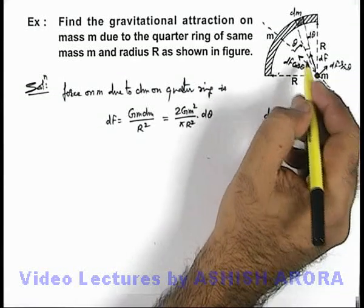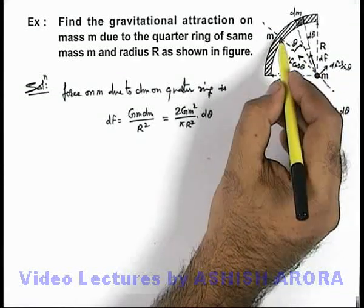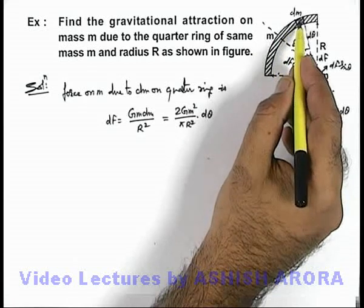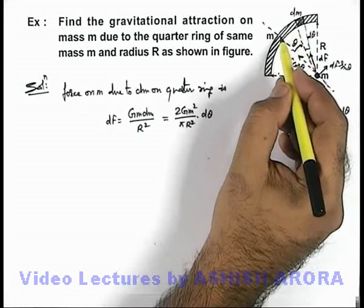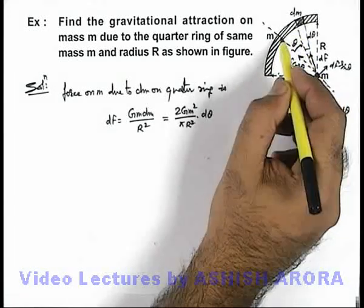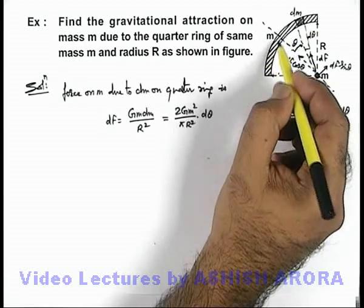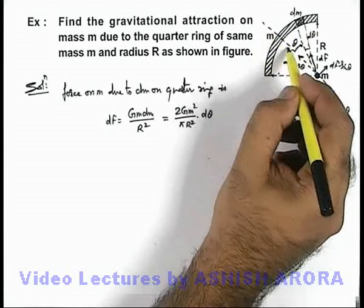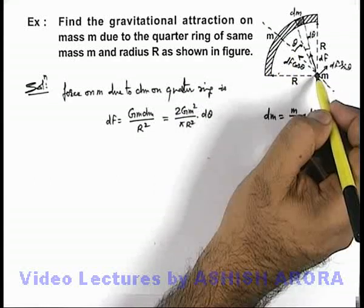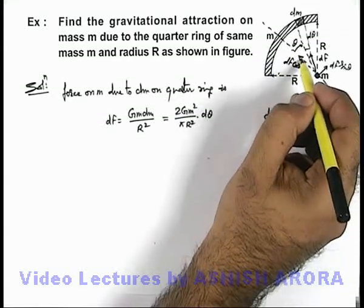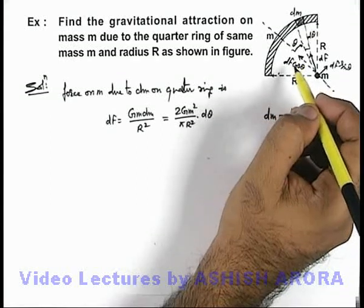And here we can see when we integrate it, corresponding to each element on one side of the ring from the angle bisector, there will be another segment which will exist on the other side of the ring from this angle bisector, for which we can say dF sin θ will cancel out and dF cos θ will be added up.